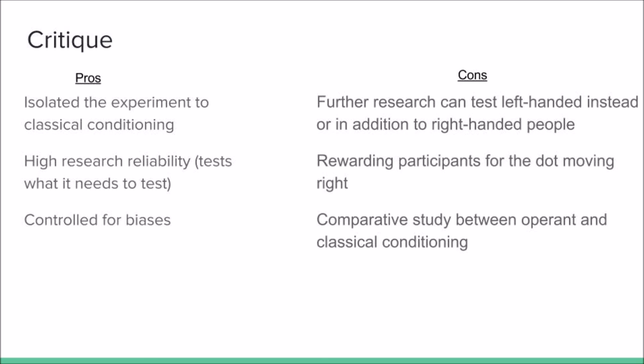Despite these changes, the study performed succeeded in taking into account bias, as well as creating a method to isolate classical conditioning and focus on one type of learning. Furthermore, empirical evidence in the fMRI images and statistical analysis provide the foundation for reliable research.